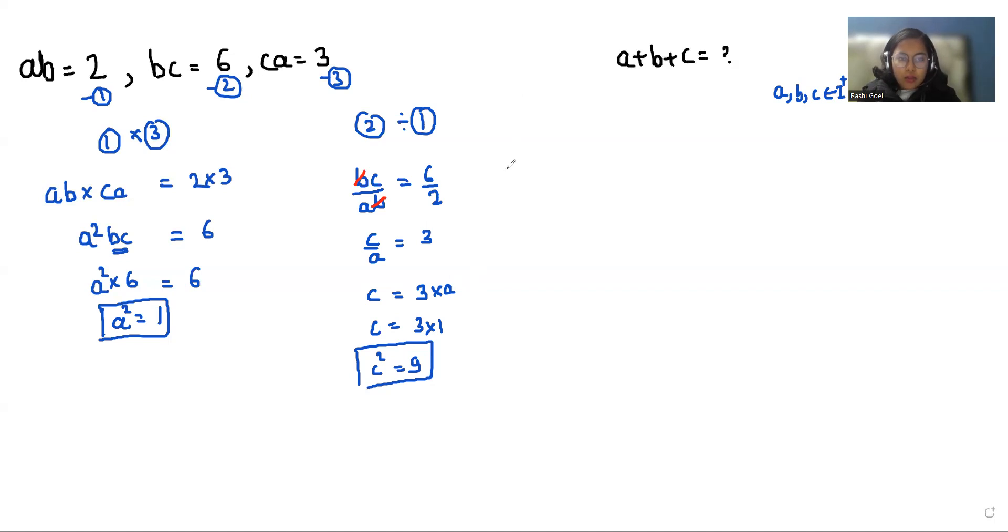Now I'm going to divide second equation by third. So we get BC by CA equals 6 by 3. So we cancel out C with C. So B by A equals 2, and A is 1. So the value of B is 2 and the value of B squared is 4.